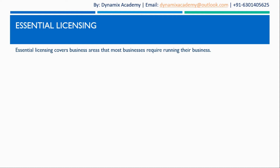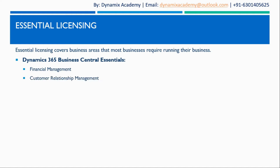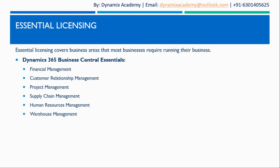Essential licensing covers the business areas that most businesses require for running their operations. Under essential licensing you get financial management, customer relationship management, project management, supply chain management, human resource management, and warehouse management.